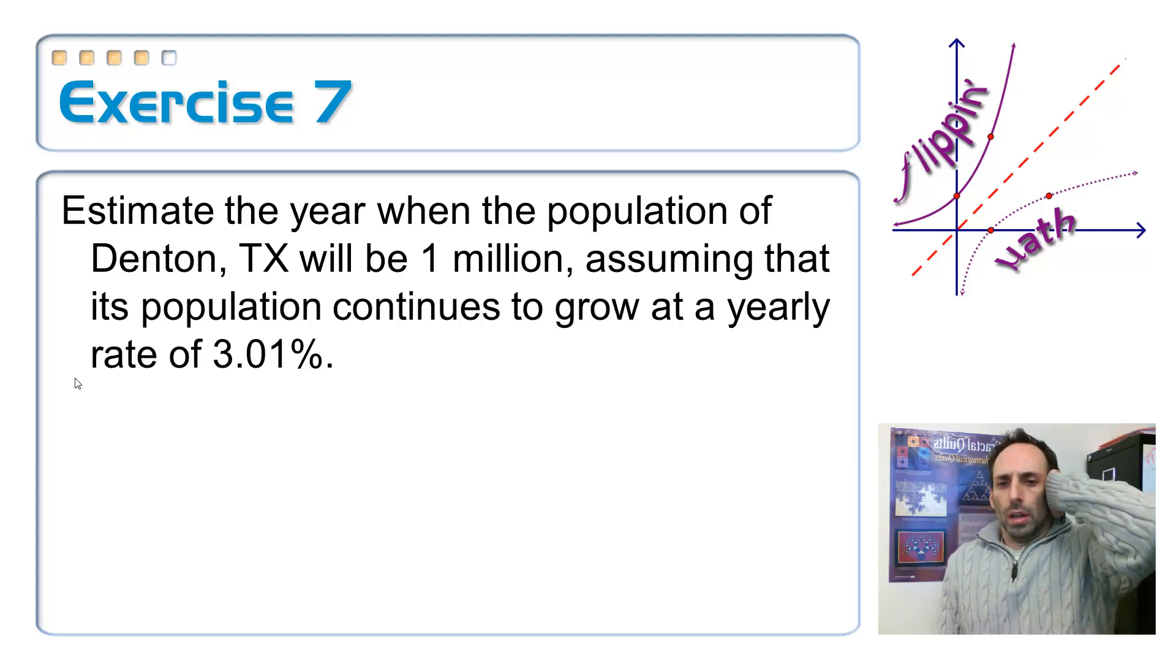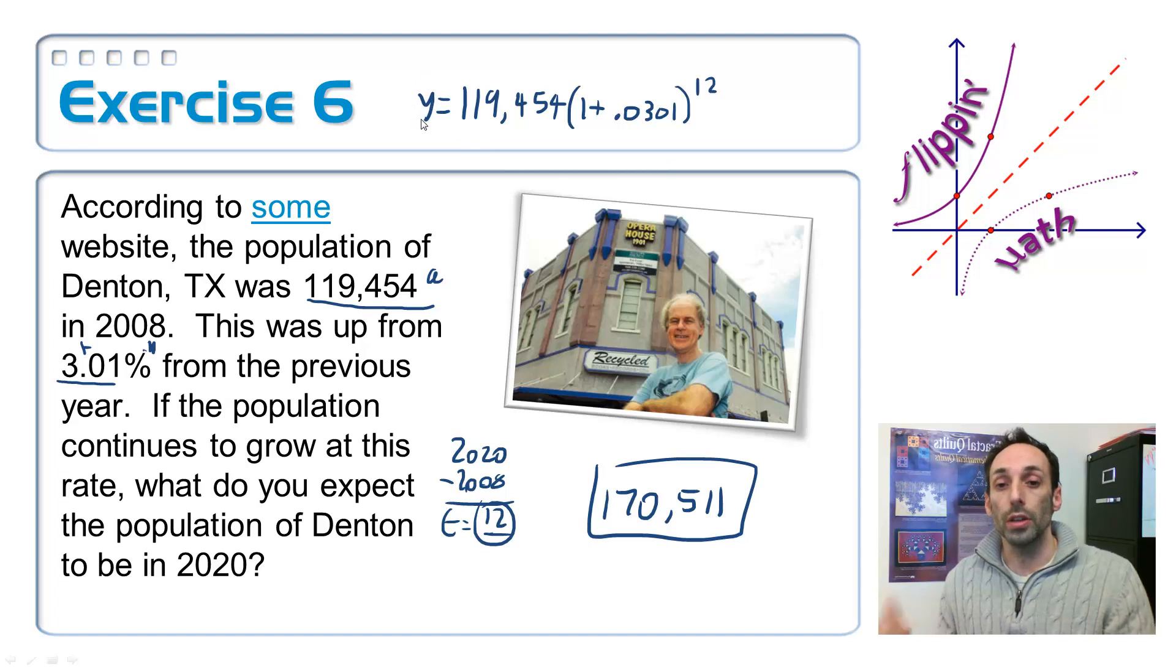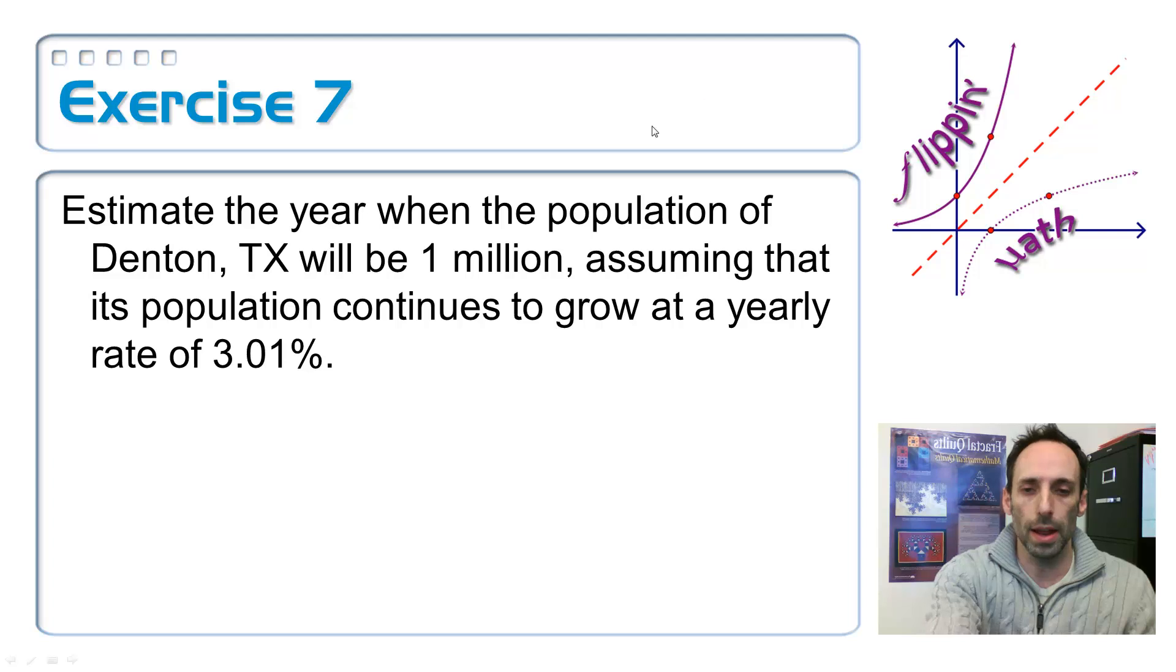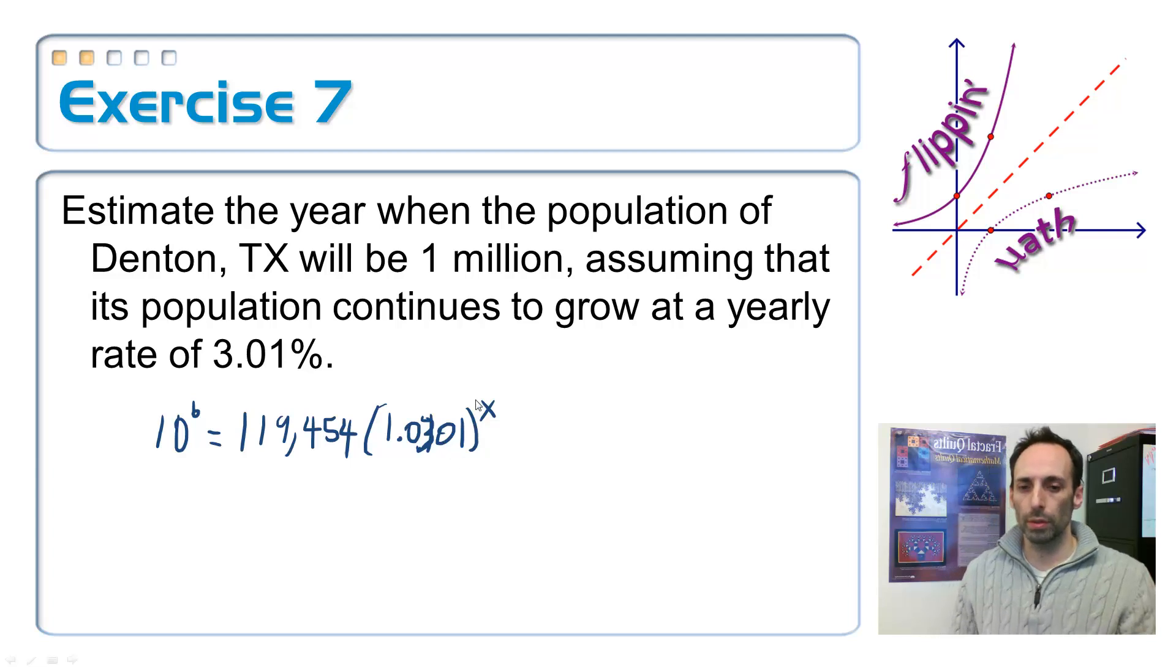So estimate the year when the population of Denton, Texas will be 1 million, assuming its population continues to grow at a yearly rate of 3.01%. So this time, if I go back over here, I don't know, I do know the y. I'm going to make that a million. But I don't know where this 12 is. That's going to be my variable. That's going to be my x. So my equation that I'm trying to solve for x, then, is a million, which I'm just going to write as 10 to the 6, is equal to 119,454 times 1.0301, all raised to the x power. I don't know what that x power is.